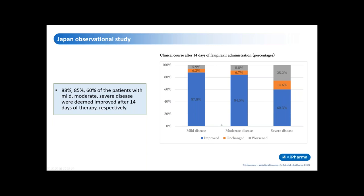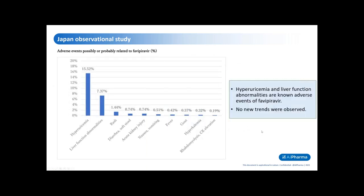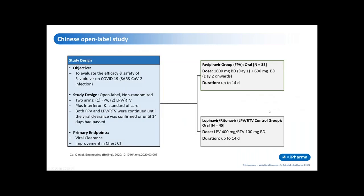Fourteen days after administration of the drug, the percentage of patients who improved in each of the clinical categories improved to 88 percent, 85 percent, and 60 percent in the mild, moderate, and severe disease categories respectively. They also looked at adverse events, finding that 15 percent of patients presented with transient hyperuricemia and 7.3 percent presented with elevated liver enzymes.